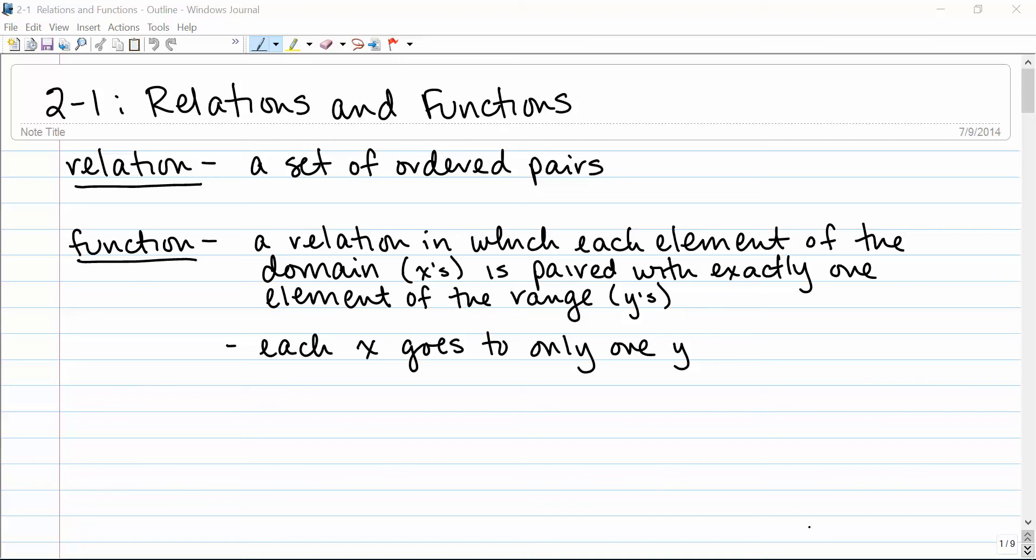Section 2-1 is on relations and functions. You'll recall from Algebra 1 that a relation is just a set of ordered pairs. However, a function is a relation in which each element of the domain, that is the x's, is paired with exactly one element of the range, that is the y's. So in other words, each x goes to only one y.